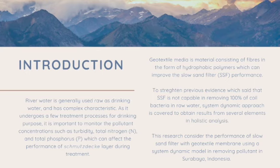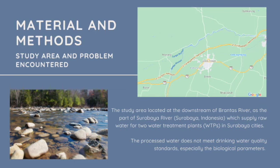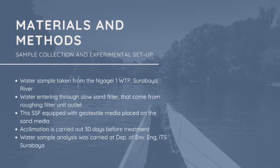Basically this research considers the performance of slow sand filter with geotextile membrane using a system dynamic model in removing pollutant in Surabaya, Indonesia. The study area is located at the downstream of Brantas River as part of Surabaya River which supplies raw water for two water treatment plants in Surabaya city. The problem is the processed water does not meet drinking water quality standards, especially the biological parameter.